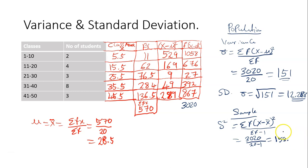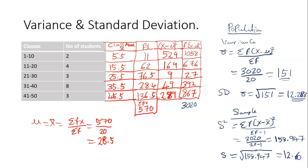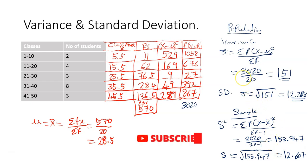That gives us 158.947. To get the sample standard deviation, small letter s, it is the square root of the sample variance — square root of 158.947. You have to check the question: if it's a population question use the population formula; if it's a sample question use the sample formula. In the next video I'll show you how to use the calculator to compute the variance and standard deviation. Thank you for watching.